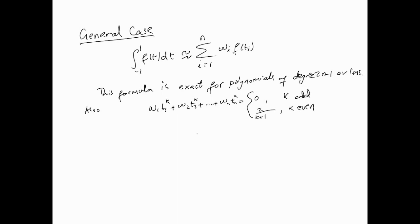Continuing from the previous video, we're going to generalize the idea. In the previous one, we just looked at the n equals 2 case, so i equals 1 to 2, giving w1·f(t1) and w2·f(t2). Now, suppose we wanted to extend that to more points and more weights. These w's are the weights and the t's are called abscissae. This formula is exact for polynomials of degree 2n minus 1 or less.